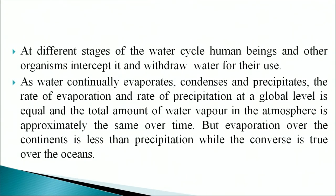At different stages of the water cycle, human beings and other organisms intercept and withdraw water for their use. As water continually evaporates, condenses, and precipitates, the rate of evaporation and the rate of precipitation at a global level are approximately equal, meaning the total amount of water vapor in the atmosphere remains roughly the same over time. However, evaporation over the continents is less than precipitation, while the converse is true over the oceans.